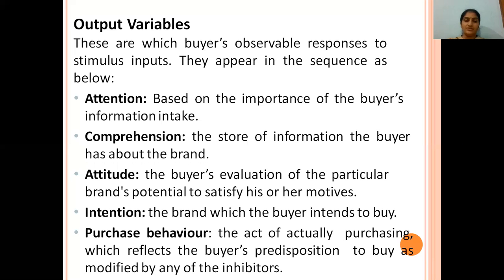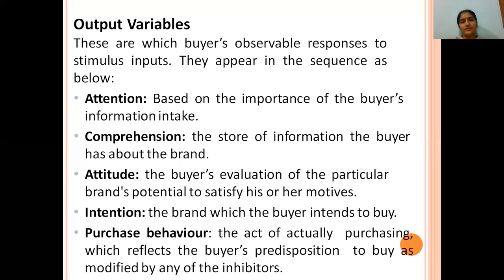Then comes intention — the brand which the buyer intends to buy, where the buyer shows interest in purchasing. And finally, purchase behaviour — the act of actually purchasing, which reflects the buyer's predisposition to buy as modified by any inhibitors. The output variables flow from downward to upward in the diagram.